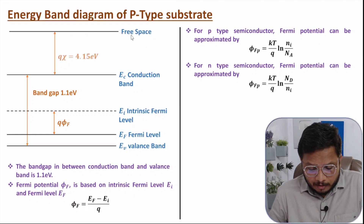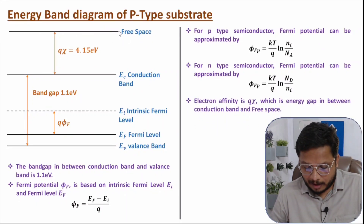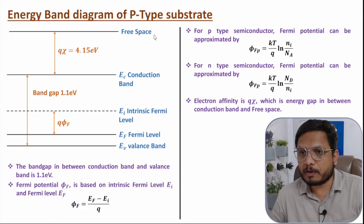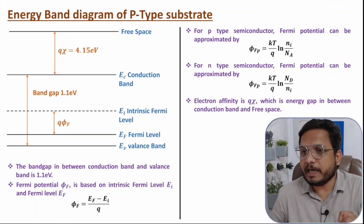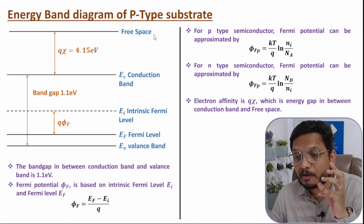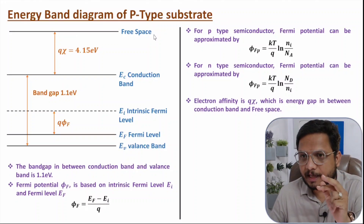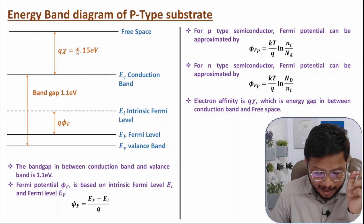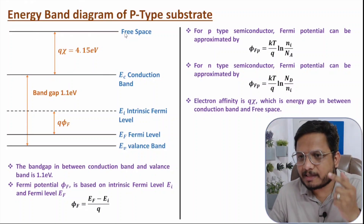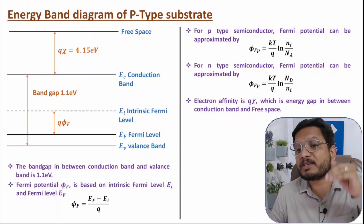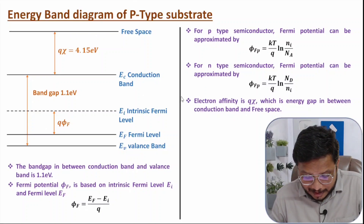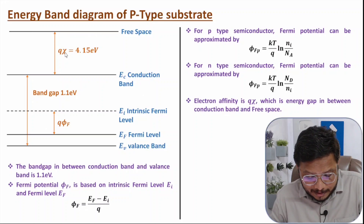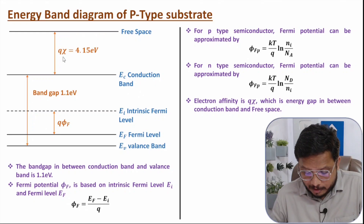Here we also have free space energy. I want to explain one more definition: electron affinity of a given material. Electron affinity is the energy gap between the conduction band and free space — the amount of energy required to make an electron free from the conduction band. For this P-type substrate (silicon), that is 4.15 eV, and we can calculate it as q·χ.